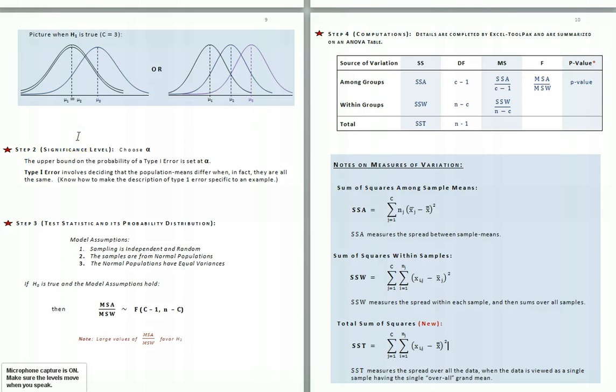The next step in the hypothesis test is to choose the maximum probability of making a Type I error — that is, the maximum risk we're willing to take of deciding that at least two of the population means are different, when in fact they're all the same.